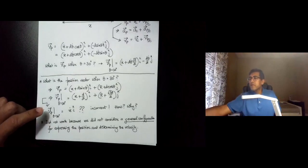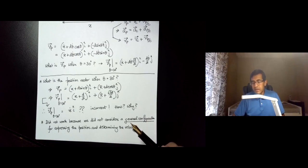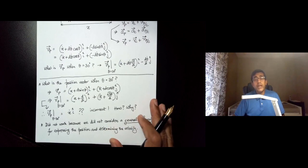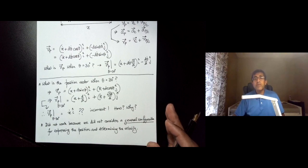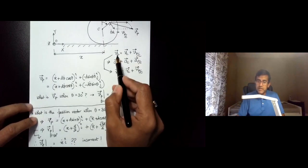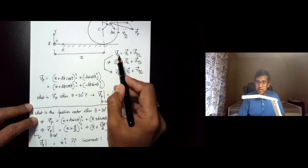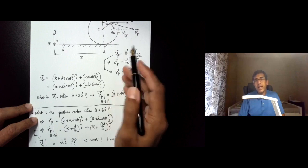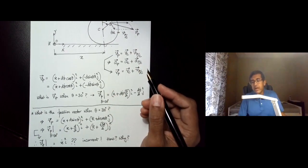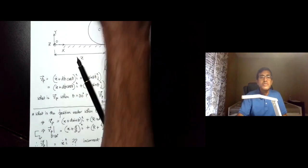In the next video, we will talk about how to find velocities by directly using the principles of relative velocities — for example, using the relation that the velocity of P equals the velocity of C plus the velocity of P with respect to C. That is the approach we will cover next. Thank you.